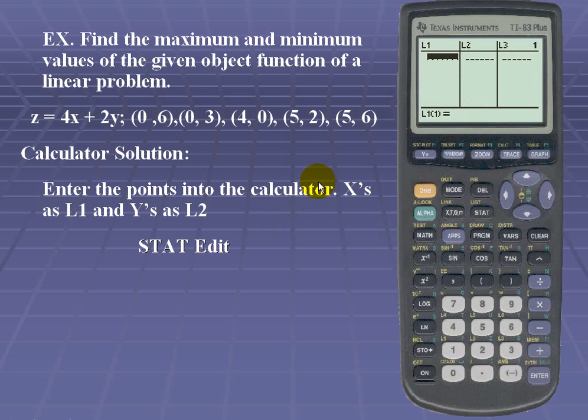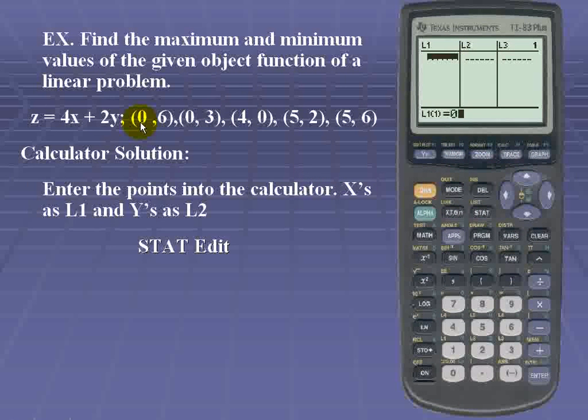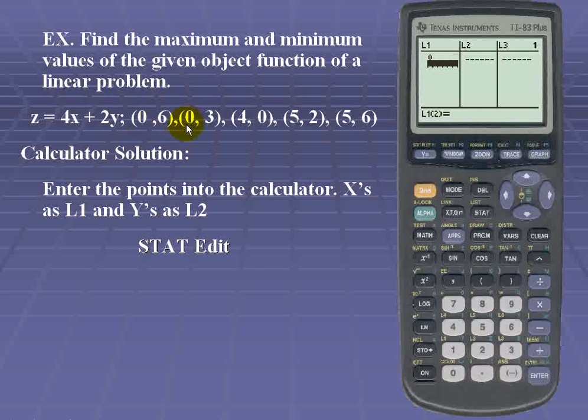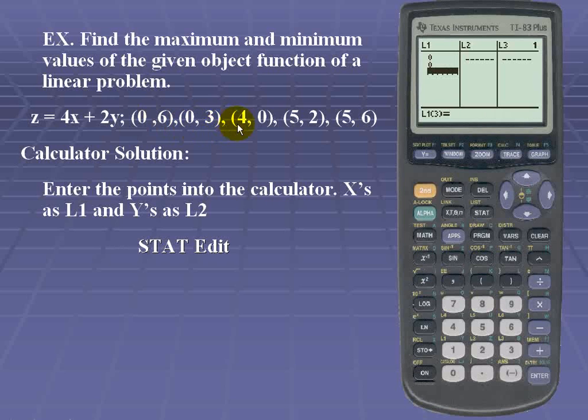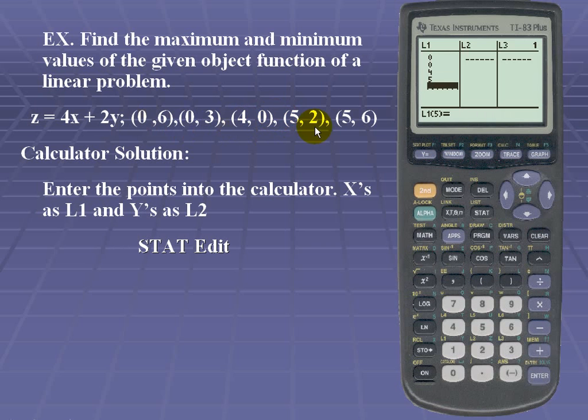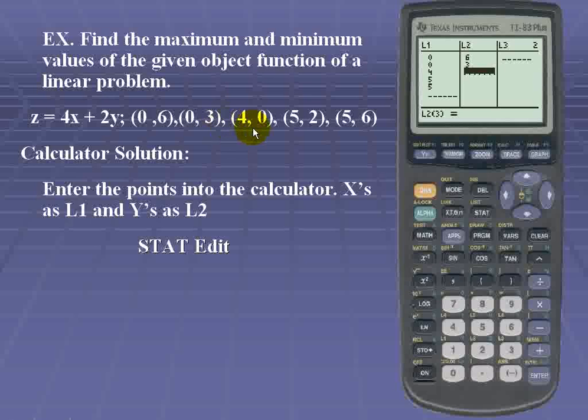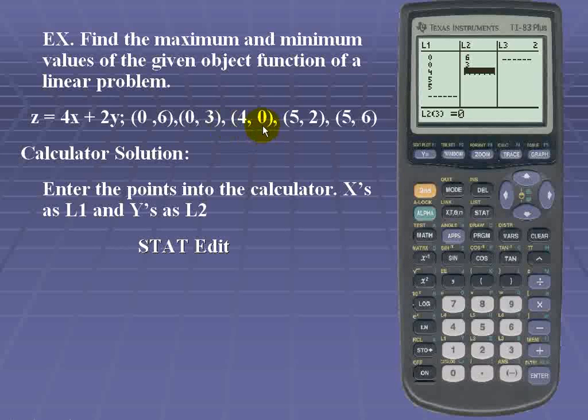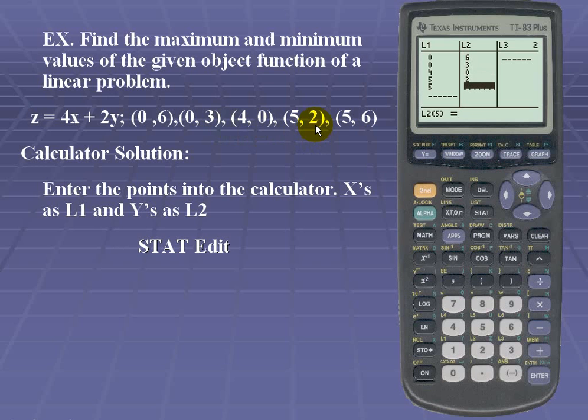So we're going to enter our x's as list 1. So on list 1 we should have 0, 0, 4, 5, and another 5. For list 2 we have 6, 3, 0, 2, and 6.